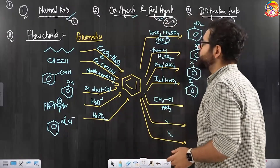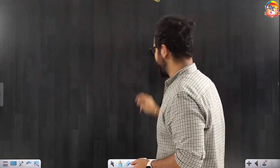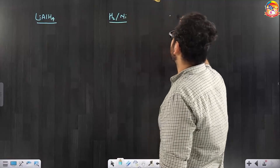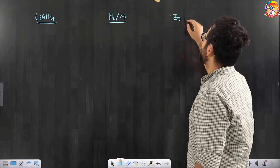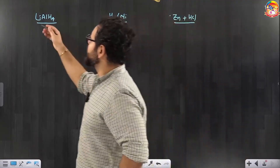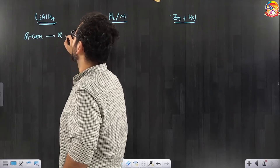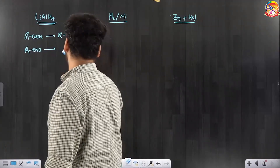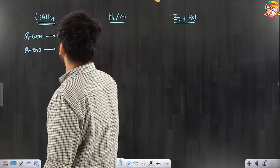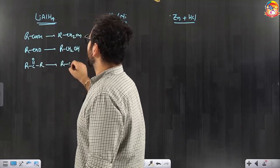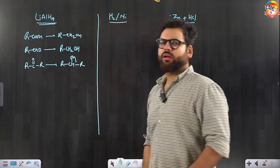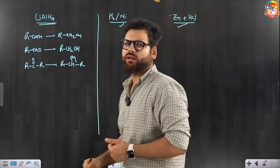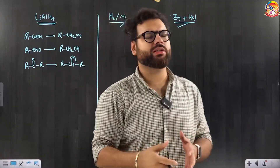Oxidizing agent and reducing agent — how to remember them: you can write what LiAlH4 does, what hydrogen with nickel does, what zinc with HCl does. You can write what reactions they show. LiAlH4 converts carboxylic acid to alcohol, converts aldehydes to alcohol, converts ketones to secondary alcohols — all those reactions which you have already seen in your notes or NCERT, you can write all those reactions at one place. Note where each reagent will work and where it will not. Same for hydrogen with nickel, NaBH4, zinc in the presence of HCl — all these types of reducing agents and oxidizing agents you should keep in one place.